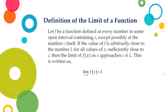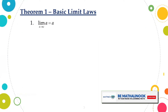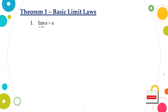Let us start off with Theorem 1, which is the basic limit laws. For the first one, the limit of a as x approaches c is equal to a, wherein a is a constant number. Meaning, the limit of a constant number as x approaches c is equal to the constant number itself.